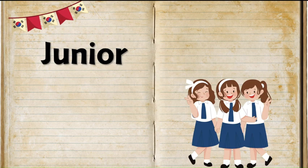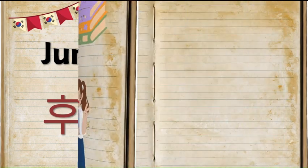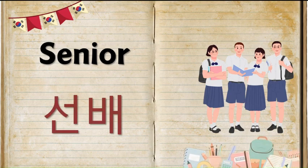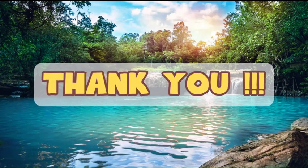Junior in Korean is called 후배 (hubae). Next comes the Korean word for 'senior' — a student who is older than you — and in Korean senior is 선배 (seonbae). So these were all the people related to school in Korean language. I hope you liked this video. Don't forget to like, share, and subscribe to the Korean Express YouTube channel. Thank you.